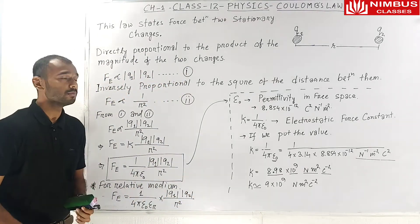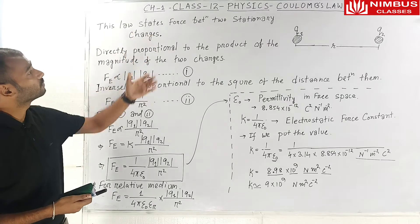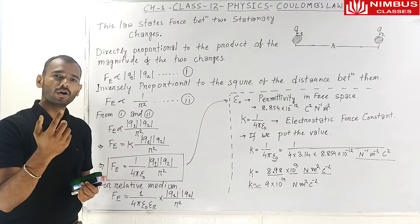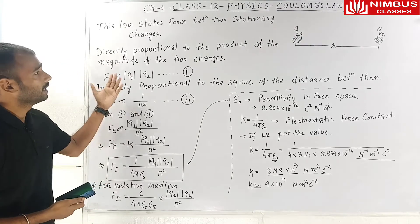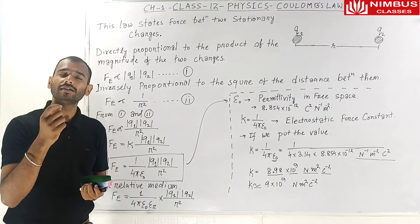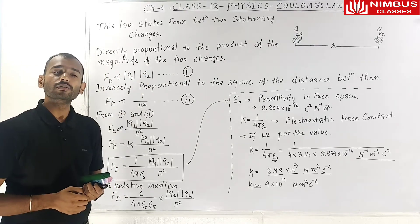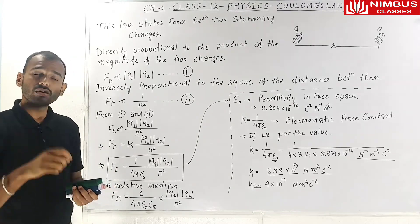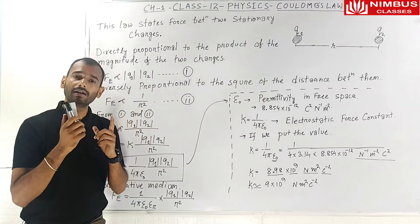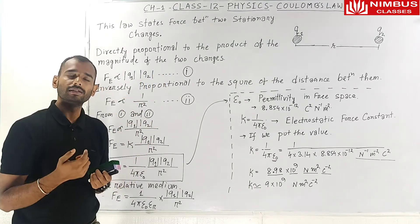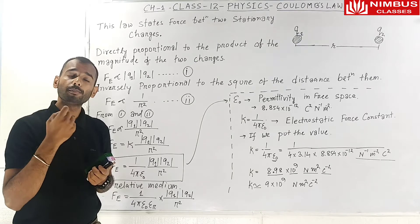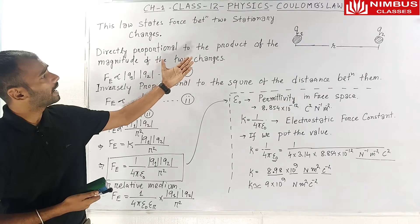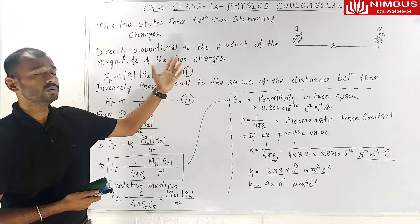Coulomb's law states the force between two stationary charges. The electrostatic force between two stationary point charges Q1 and Q2 is most important. The electrostatic force is directly proportional to the product of the magnitude of the two charges, Q1 and Q2.